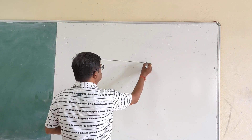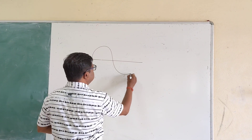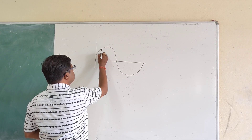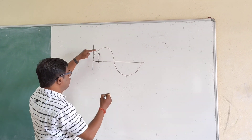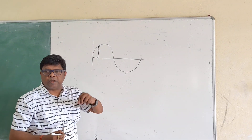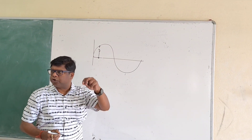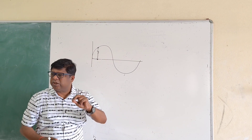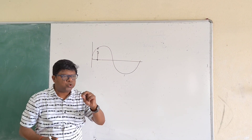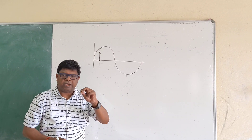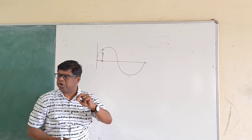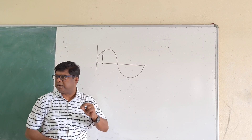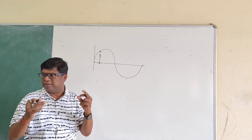When the wave travels in a medium, each particle of the medium makes a to-and-fro motion about the mean position. As a result, when the particle executes SHM, it carries two types of energy: kinetic energy and potential energy. That energy transfers from one particle to another particle.